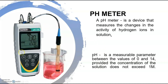A pH meter is a device that measures the changes in the activity of hydrogen ions in solution. pH is a measurable parameter between the values of 0 and 14, provided the concentration of the solution does not exceed 1F. Solutions with a pH of less than 7 are acidic, whereas those with a pH greater than 7 are alkaline. The pH meter should be calibrated before each measurement using at least two standard buffer solutions of known pH values, typically around 4 and 7.